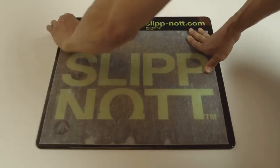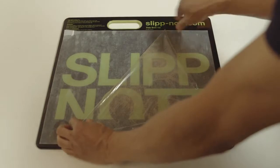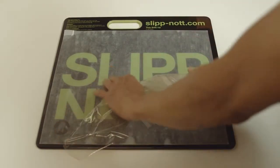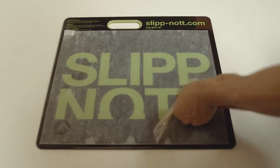As the sheets get dirty, you peel them off. When you get down to the red sheet, that is the last sheet. Peel that off, and you will need to replace the mat.